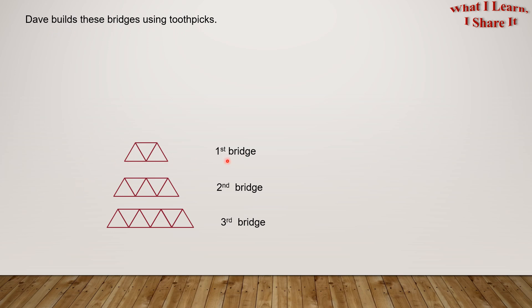The first one, the second one, and the third one. If he continues the pattern, how many triangles are needed to build the 4th and the 5th bridge?